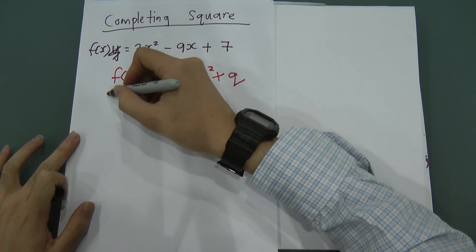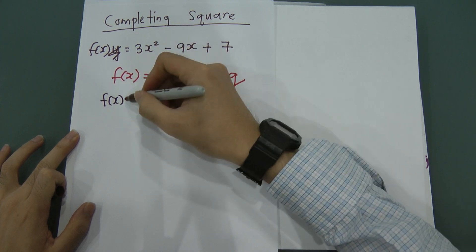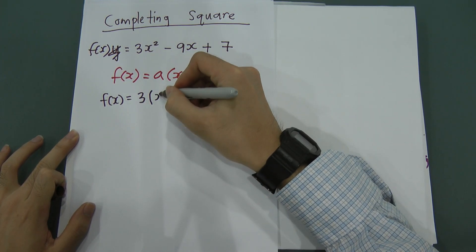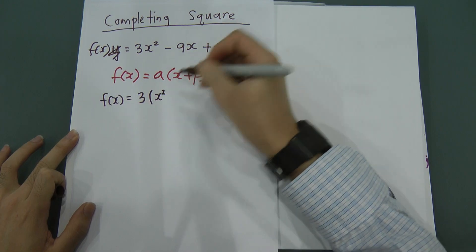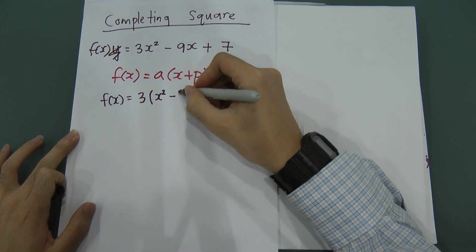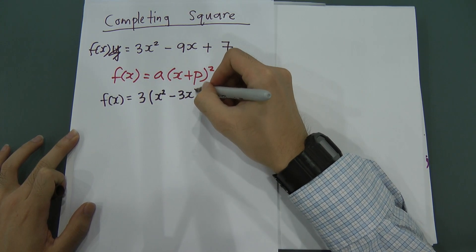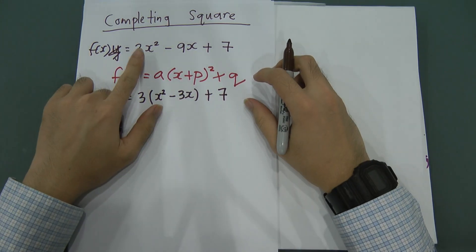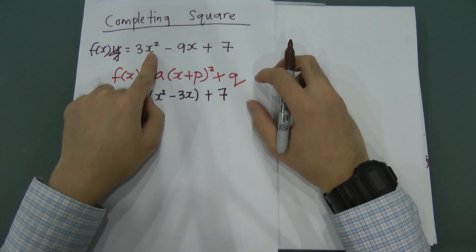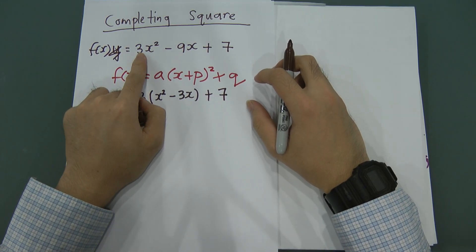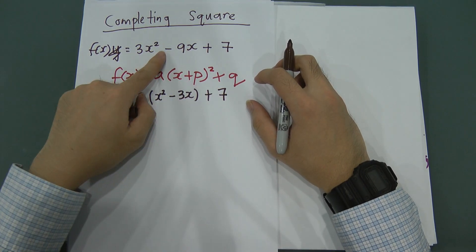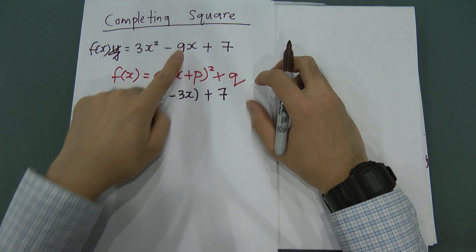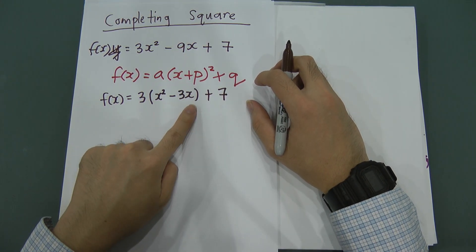After factorizing, I get f(x) = 3(x² - 3x) + 7. I only factorize out 3 for 3x² and negative 9x. Taking out 3 from 3x² gives x², and from -9x gives -3x. The +7 is left outside.